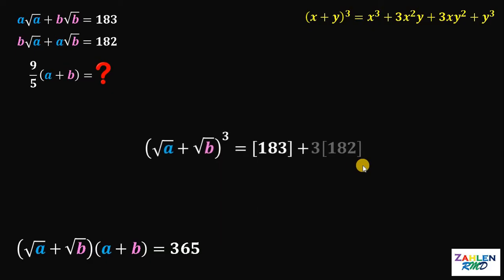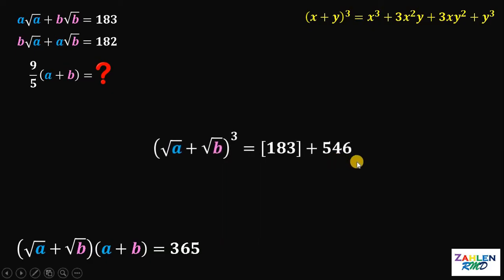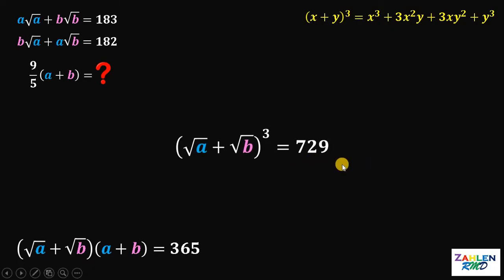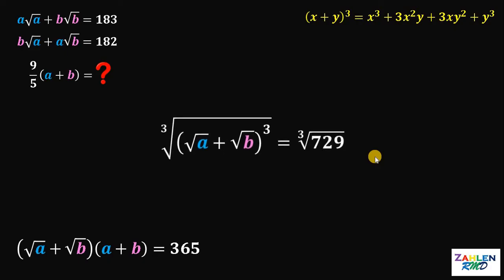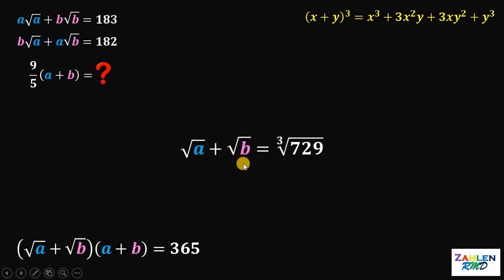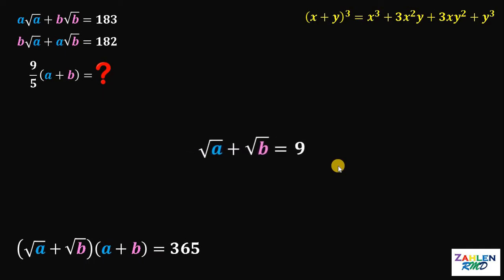Now, 3 times 182 gives us 546, and 183 plus 546 gives us 729. To get the value of square root of A plus square root of B, we take the cube root of both sides. The cube root of (square root of A plus square root of B)³ is just square root of A plus square root of B, and the cube root of 729 is 9. Therefore, the value of square root of A plus square root of B is 9.